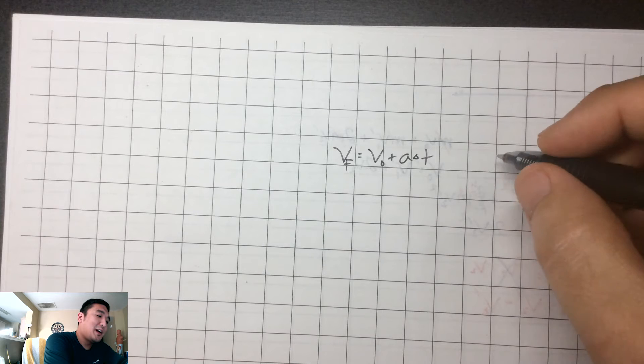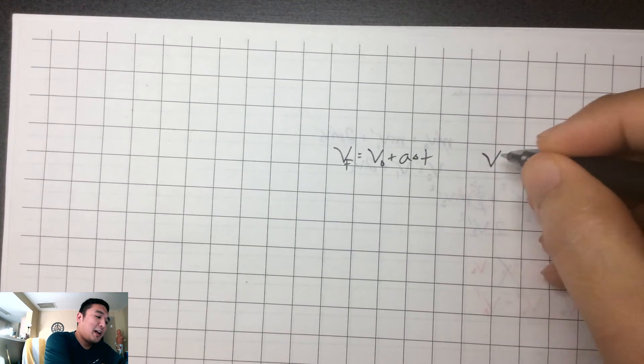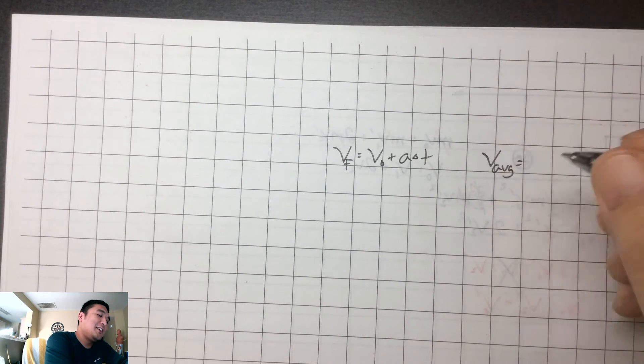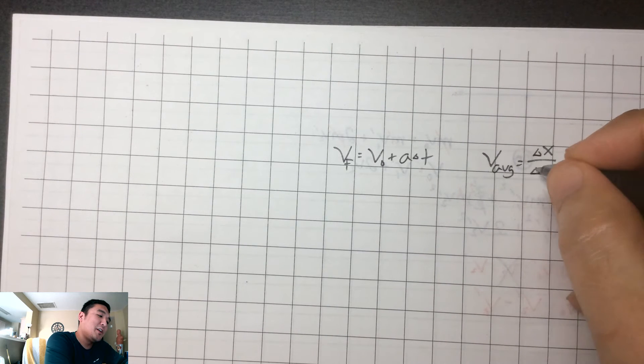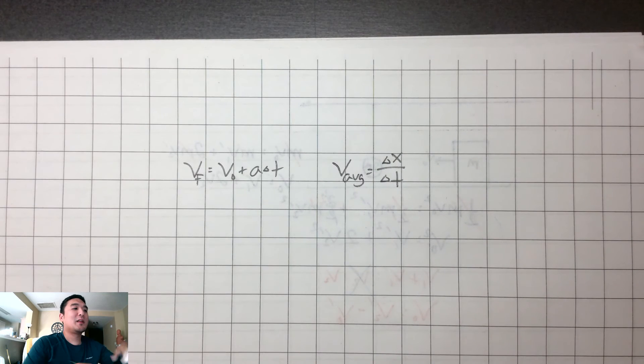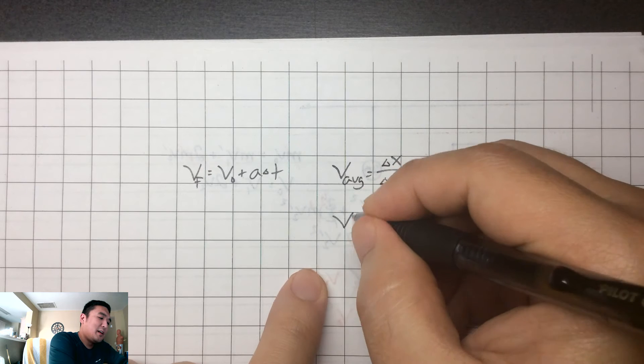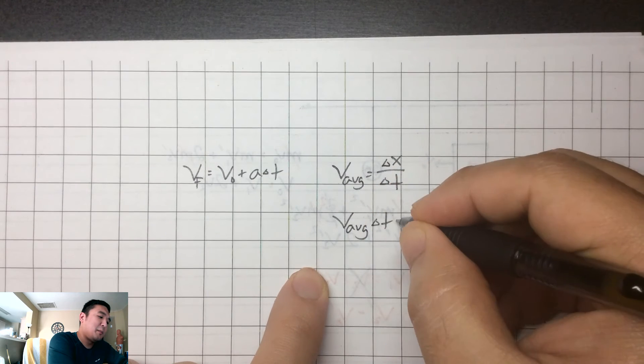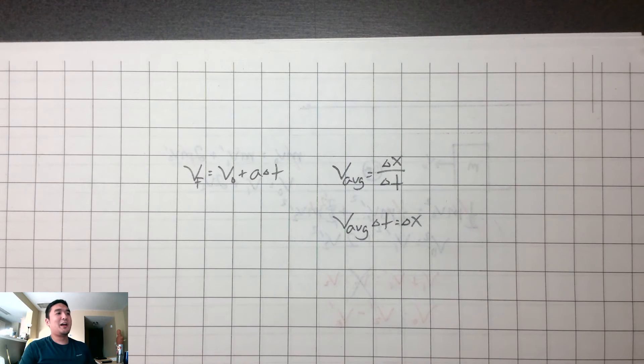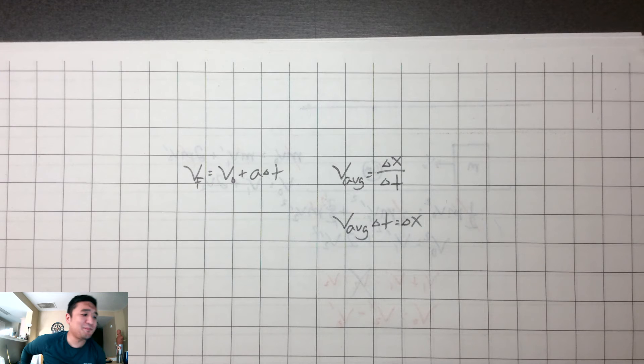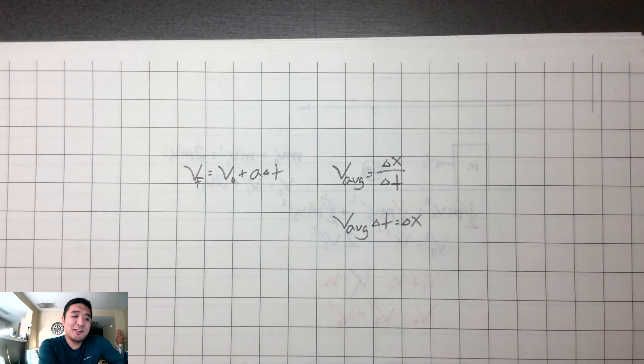We also know that if we have an average velocity, that is equal to a change of position over a change of time. So rearrange that if you want to. The average velocity times the time is equal to a change of position. We're working with one dimension right now. If you wanted to work with two dimensions, you could, but just split it up. Make sure you do one dimension at a time.